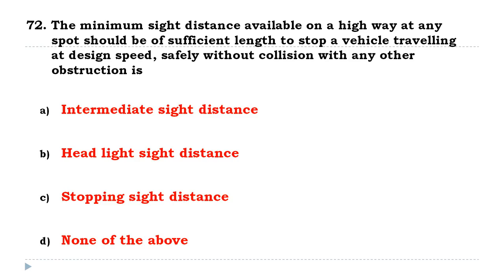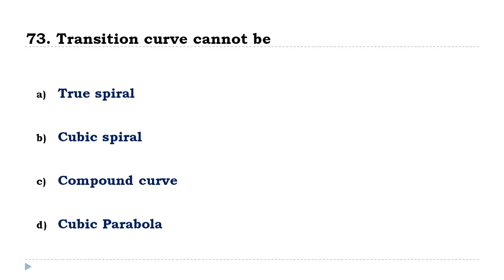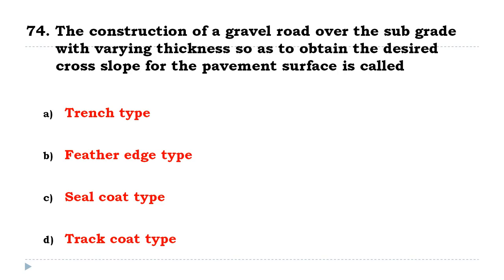A transition curve cannot be a compound curve. The construction of a gravel road over the subgrade with varying thickness so as to obtain the desired cross slope for the pavement surface is called the feather edge type.